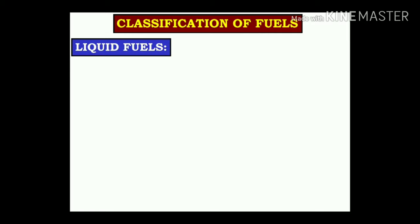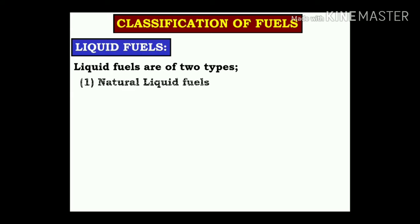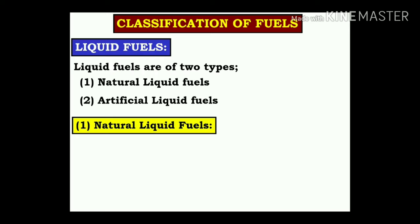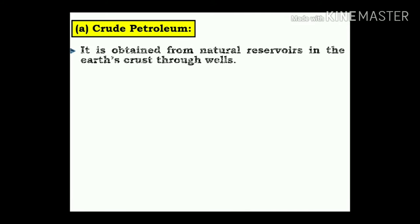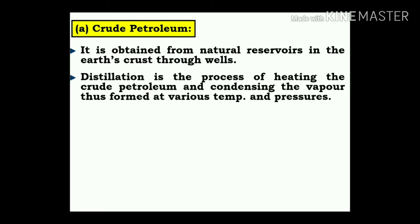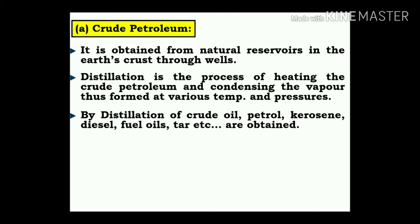Classification of liquid fuels: liquid fuels are of two types — natural liquid fuels and artificial liquid fuels. Natural liquid fuel is crude petroleum, which is obtained from natural reservoirs in the earth's crust through wells. Distillation is the process of heating crude petroleum and condensing the vapour at various temperatures and pressures. By distillation of crude oil, petrol, kerosene, diesel, fuel oils, tar, etc. are obtained.